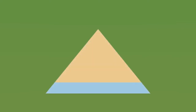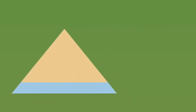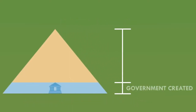Let's revisit the multiplier model that we saw in the last video. It describes the money system as having a base of base money. In the simplified version, the base is made up of cash. In reality, it's also the electronic central bank reserves that banks keep in their accounts at the Bank of England. The rest of the pyramid is made up of the third type of money — the electronic bank-created money. So the pyramid is split up into a base of government-created money and a tower of bank-created money on top.